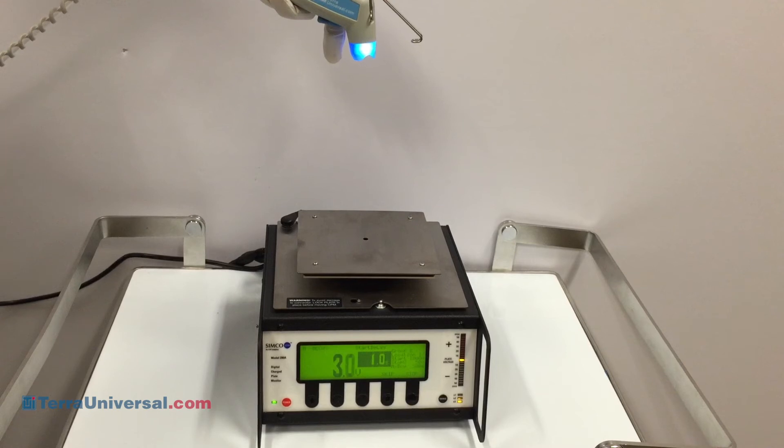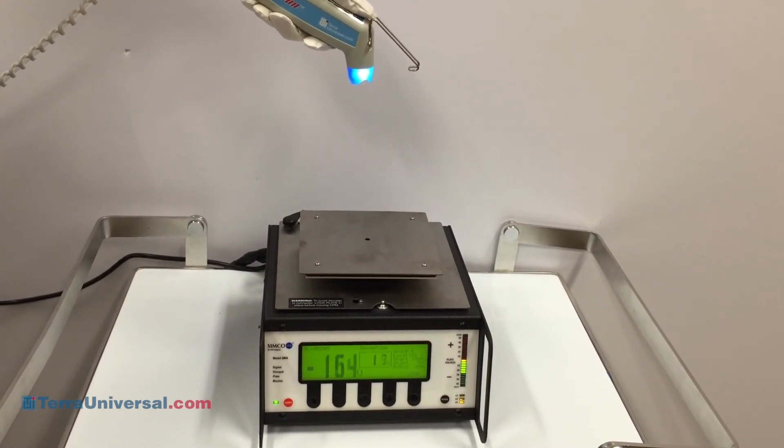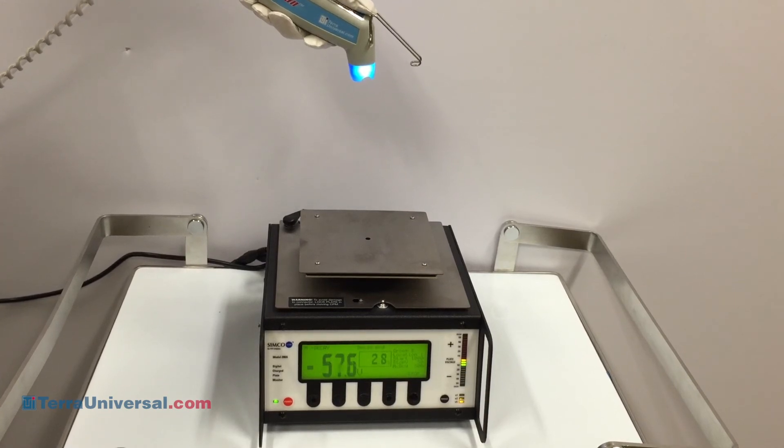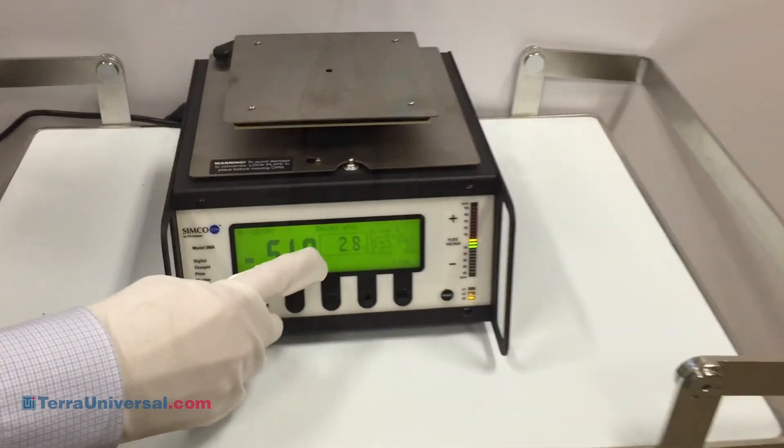The ionizing gun's elimination speed is influenced by distance and the pressure of the air supply. Your timing will vary depending on these circumstances. It took 2.8 seconds to eliminate the negative surface charge.